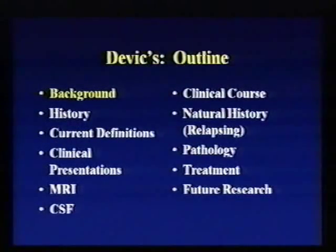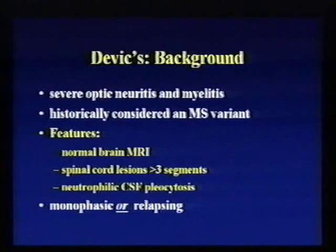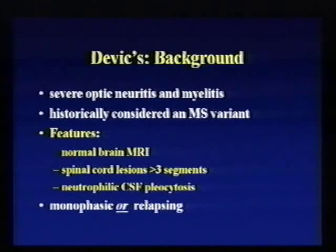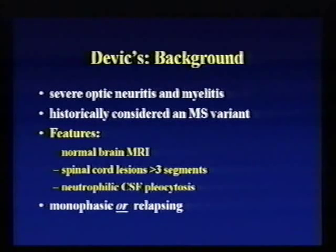This is an outline of what I'm going to talk about — it's sort of Devic's 101. The simple definition of Devic's is that it's myelitis, usually a transverse or complete spinal cord lesion, in association with optic neuritis — that is, inflammation and demyelination in the optic nerves.